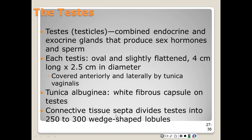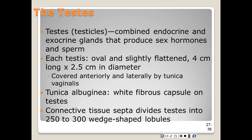Connective tissue septa divide the testes into 250 to 300 wedge tubules, each containing one to three seminiferous tubules — ducts up to 70 centimeters long that produce sperm. Between the seminiferous tubules are clusters of interstitial cells, which are the source of testosterone.